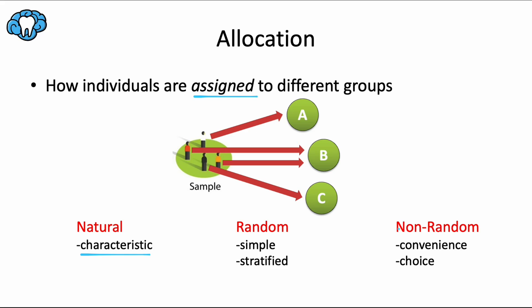And finally, we have non-random assignment, which is again not as strong as a random allocation method. Group assignment here would be based on convenience or clinician choice or popularity. Once again, the worst method on the list.